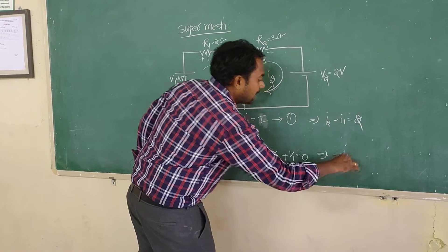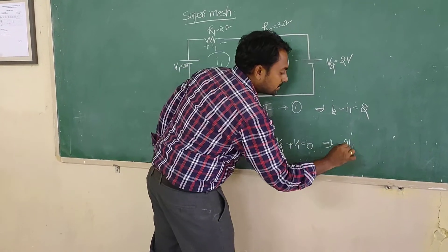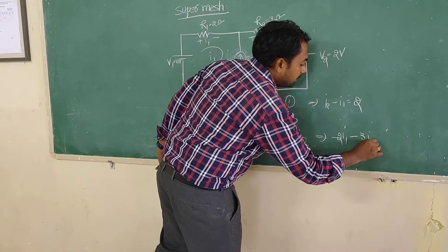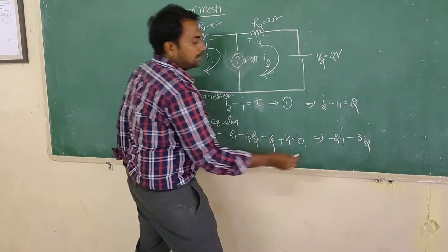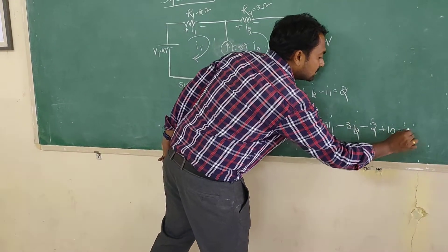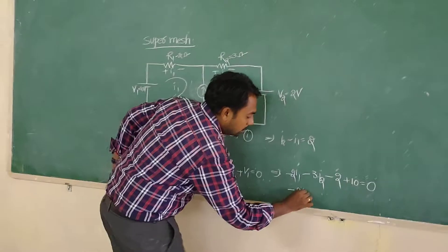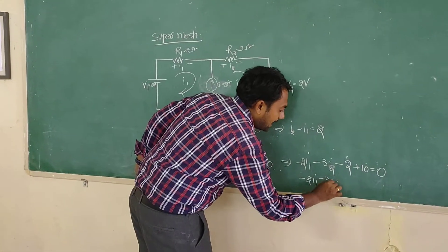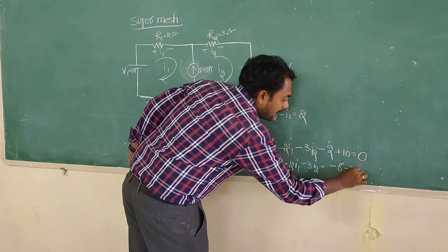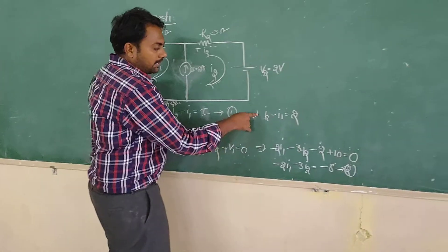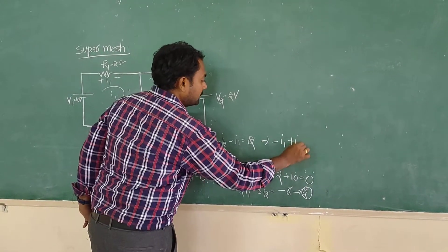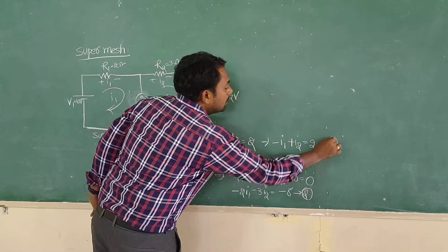Now substituting into the loop equation: minus I1 times R1 gives minus 2I1; minus I2 times R2 gives minus 3I2; minus V2 gives minus 2; plus V1 gives plus 10; equals zero. Rearranging: minus 2I1 minus 3I2 equals minus 8. This is equation 2.